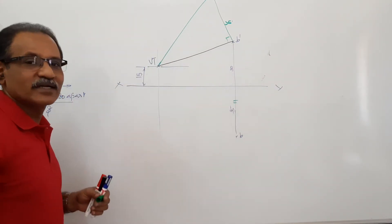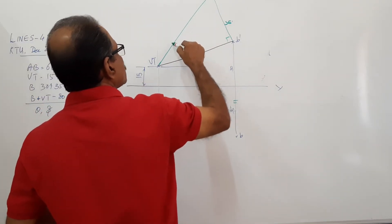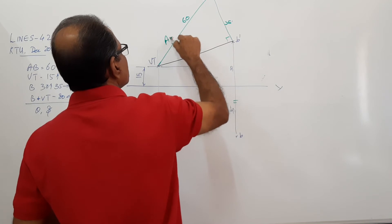On this line, you have true length. True length is 60. So from V1, measure true length 60 and mark. What is this? This is A1.